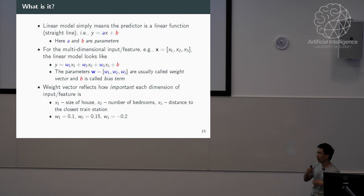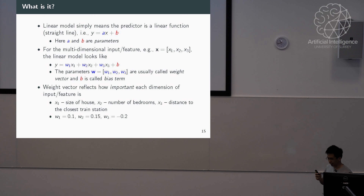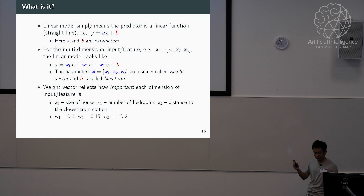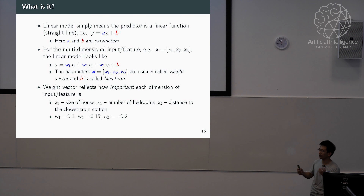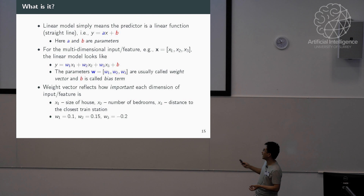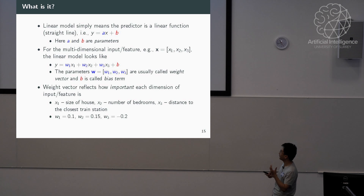For a multi-dimensional case where your feature vector has more than one element, the model looks like y = w1*x1 + w2*x2 + w3*x3 plus a bias term. These w terms we usually call the weight vector. The weight vector reflects how important each dimension of your input is. For the house pricing problem with features like size, number of bedrooms, and distance to the closest train station, size and bedrooms are positively correlated with price while distance to train station is negatively correlated.